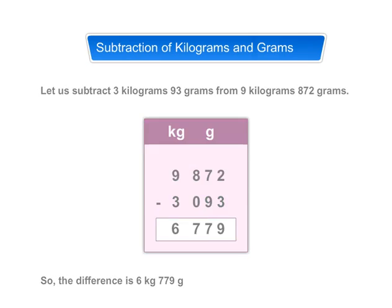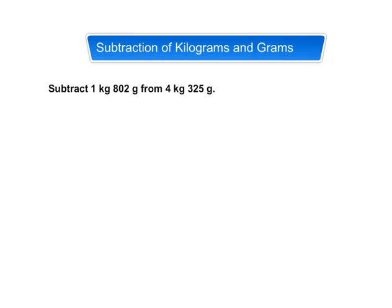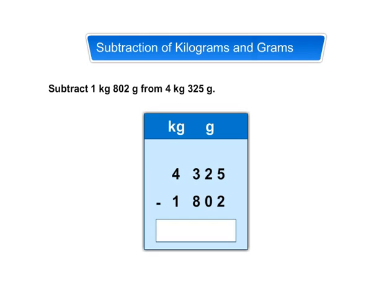Let us try one more example. Subtract 1 kilogram 802 gram from 4 kilogram 325 gram. First, arrange the numbers in columns. We cannot subtract 802 grams from 325 grams. So, we borrow 1 kilogram from kg column. Now, we can have 1 kilogram plus 325 grams is equal to 1325 grams.